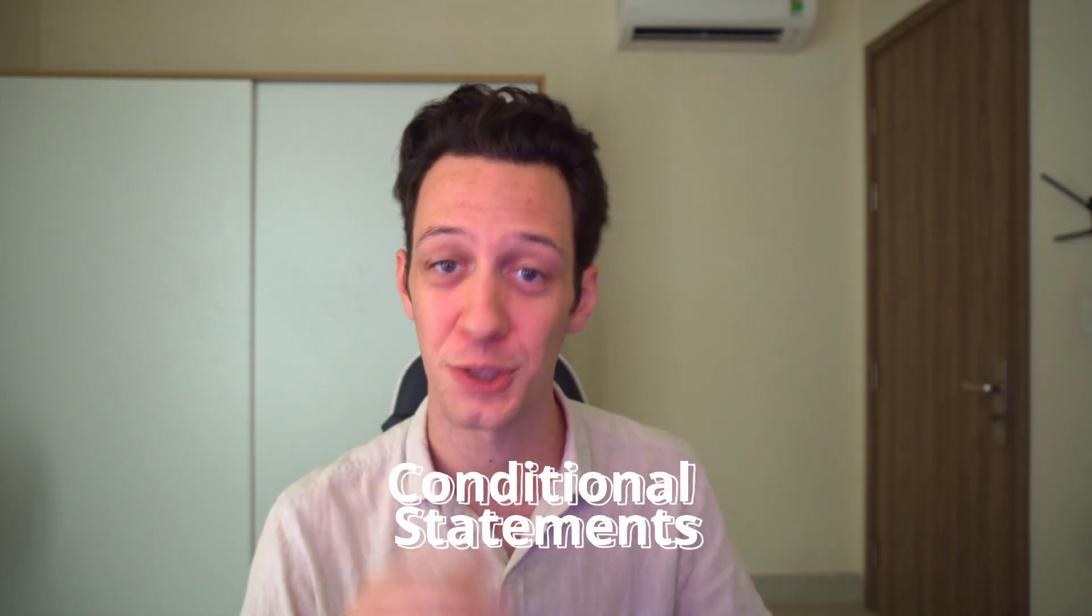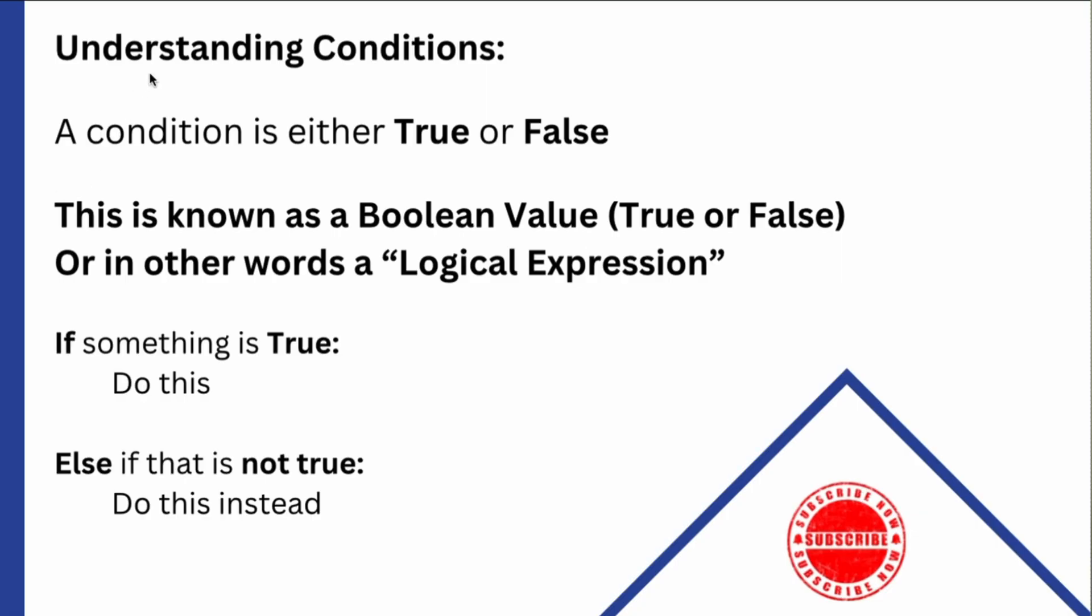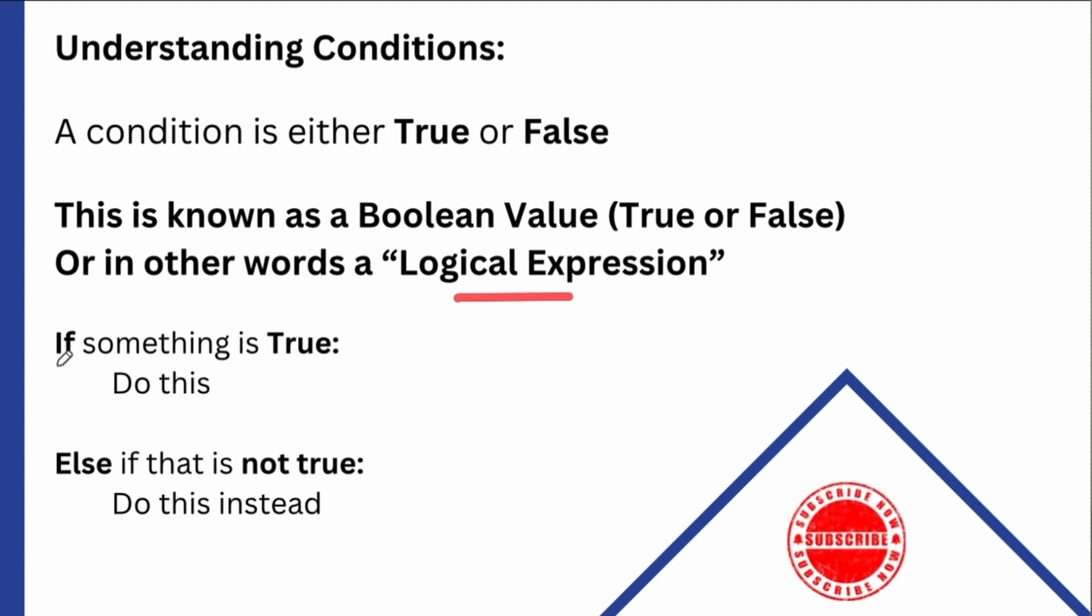To bring this week to a close, it's time for your last key topic, which is conditional statements. Now, conditions are fun. They're the real powerhouse of any programming language. It's the real way that we can interact and talk with the computer. If this is true, do something. Otherwise, do this instead. The final stage of week one, right, is conditions. We need to understand conditions. And literally, a condition, the value will be true or false. This is known as a Boolean value. Boolean is used in many programming languages. It just means true or false. In other words, this is a logical expression.